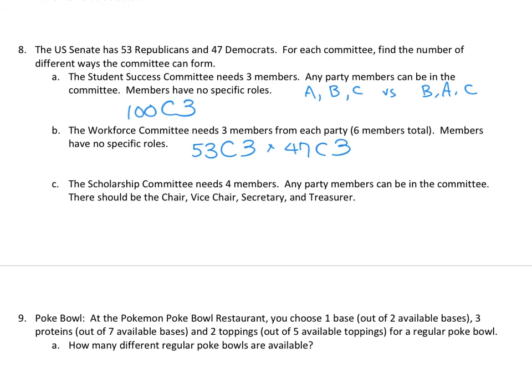Part C: the Scholarship Committee needs four members with specific roles — chair, vice chair, secretary, and treasurer. Now order matters: picking A as chair and B as vice chair is different from B as chair and A as vice chair. Since roles are specific, this is a permutation: 100P4. That wraps up the key examples — now finish the rest of the worksheet on your own.